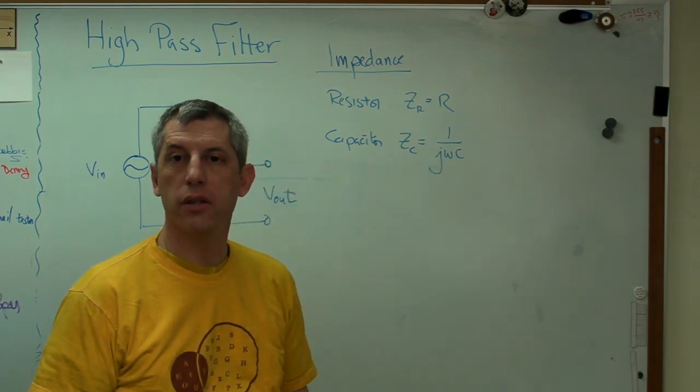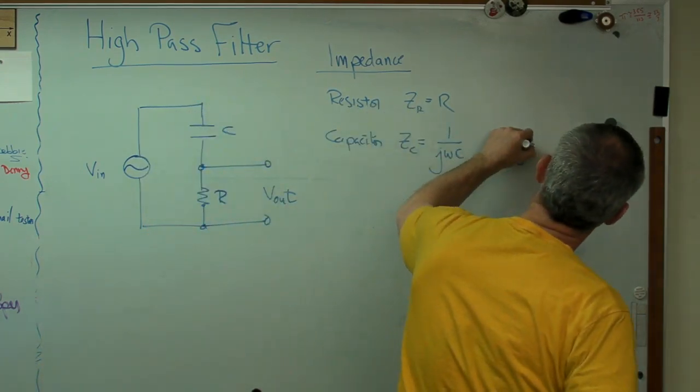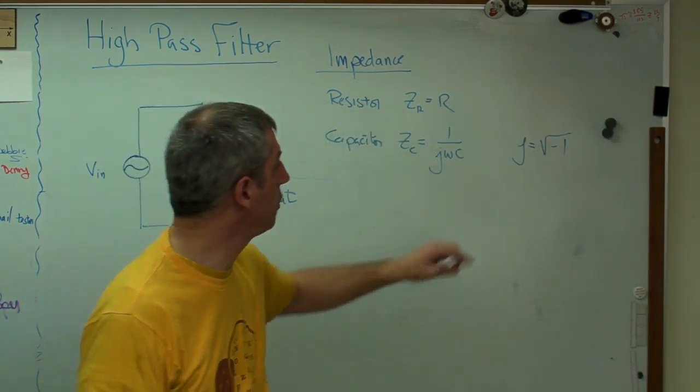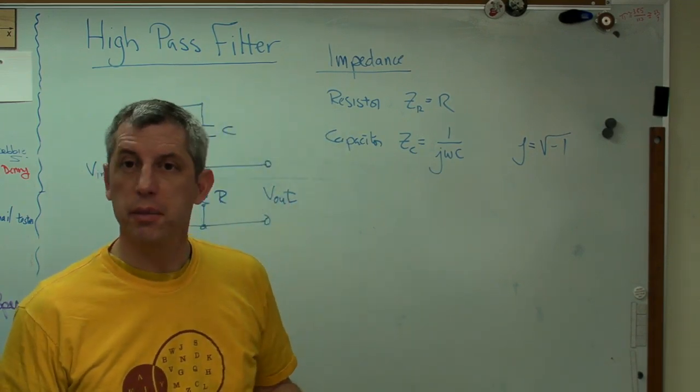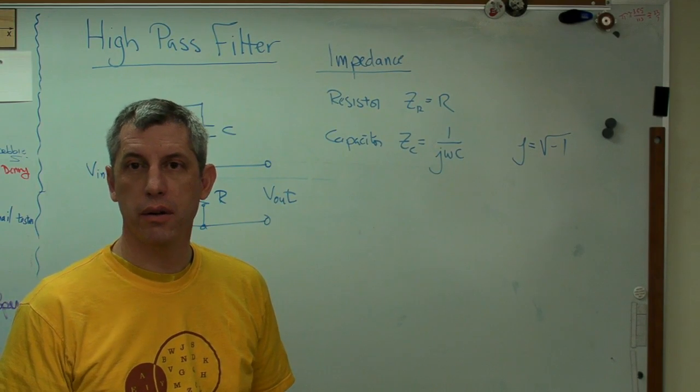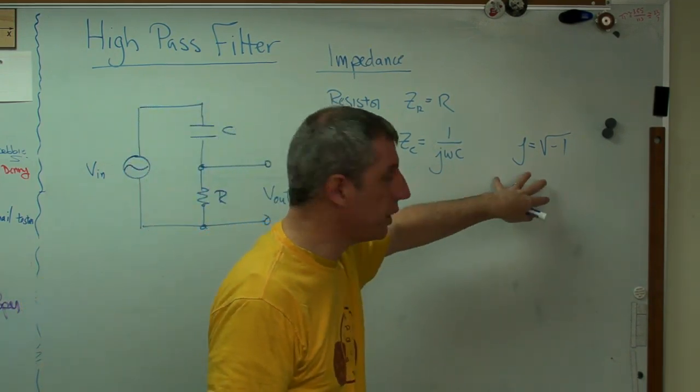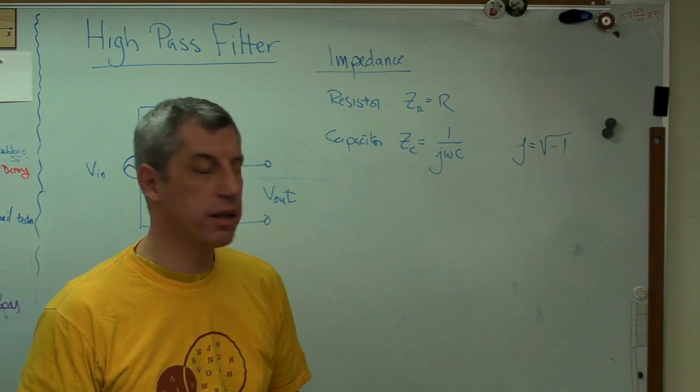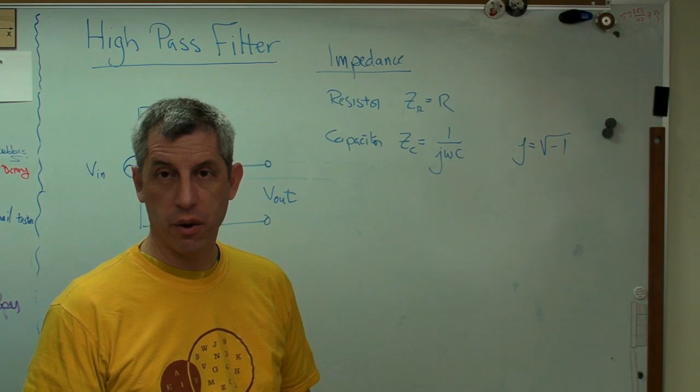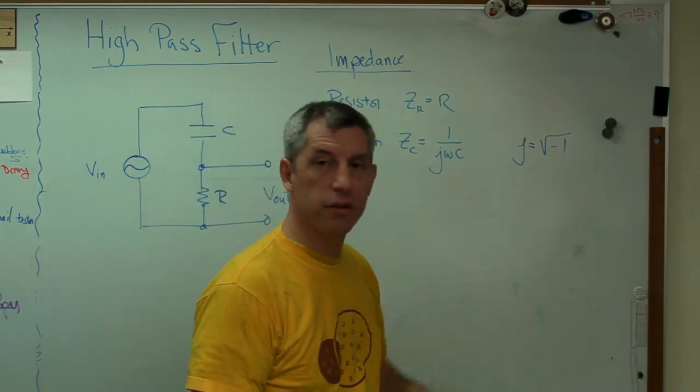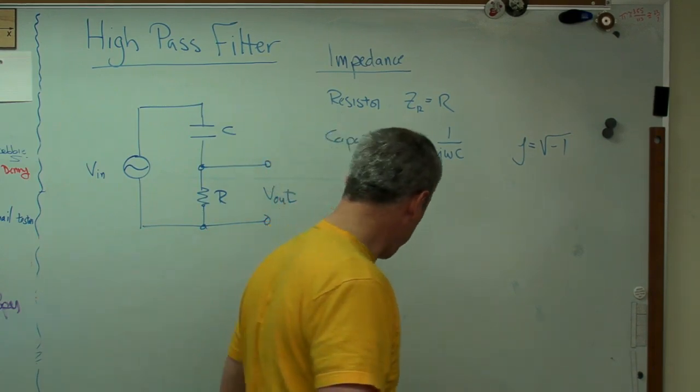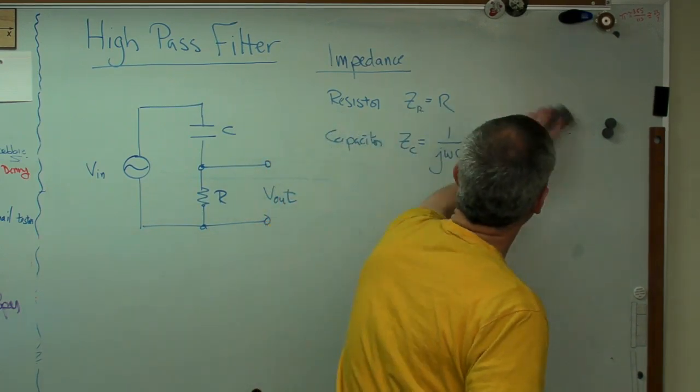And we use J, or electrical engineering types started using J, rather than i, like the rest of the world does, because they were already using i for current. So anytime you're dealing with an electrical expression, something dealing with a circuit or voltage or anything like that, i stands for current, rather than the square root of minus one. J stands for the square root of minus one, and this is true everywhere in the electrical engineering world. I'm not just making this up. So there we go. Now, if you remember, there's a voltage law, Kirchhoff's voltage law.